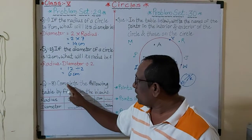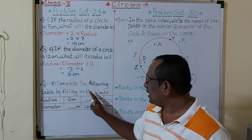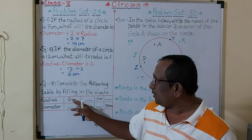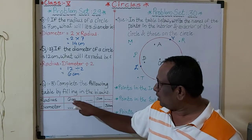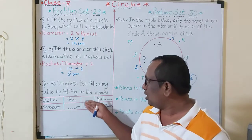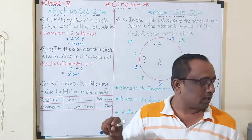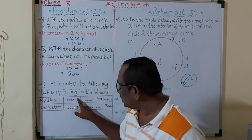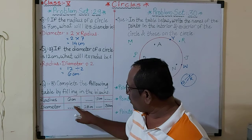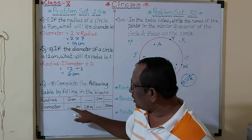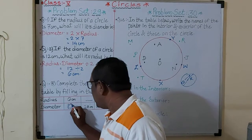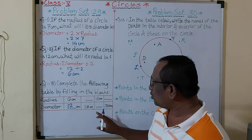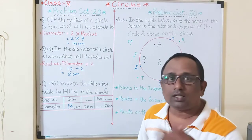The third question: complete the following table by filling in the blanks. We have to fill in the blanks — the numbers in my example are different from the textbook, so along with this, also write question number 3 from the textbook. Here, radius is 6, so diameter = 2 × 6 = 12. Next, radius is 10, so diameter = 2 × 10 = 20 centimeters.